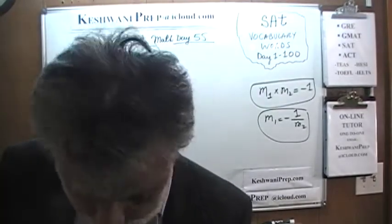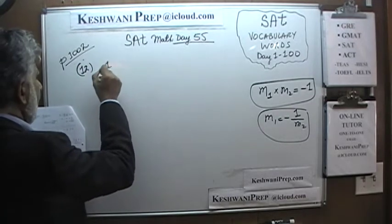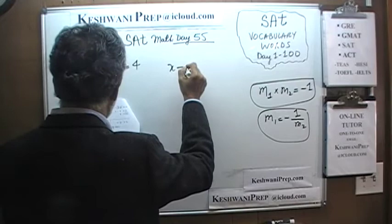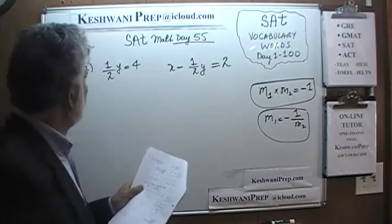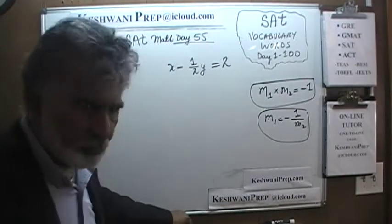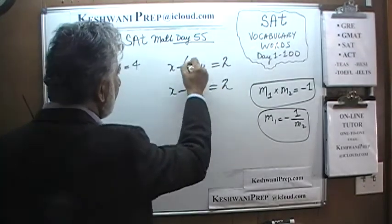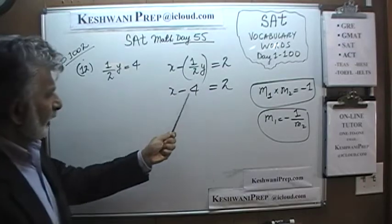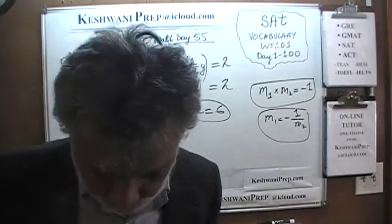Number 12. We are told that 1/2 y equals 4, and the other equation says x minus 1/2 y equals 2. What's the value of x? They tell you 1/2 y is 4, so just substitute it in: x minus 4 equals 2, therefore x equals 6. The answer is D.